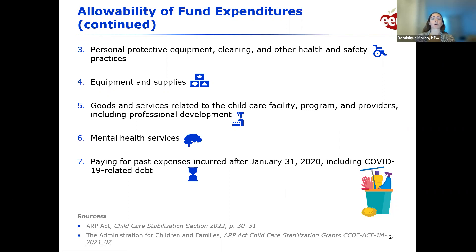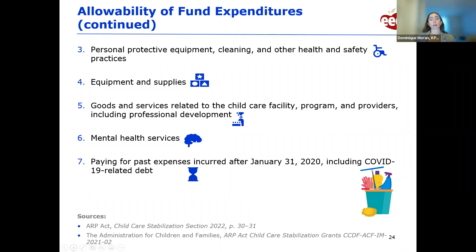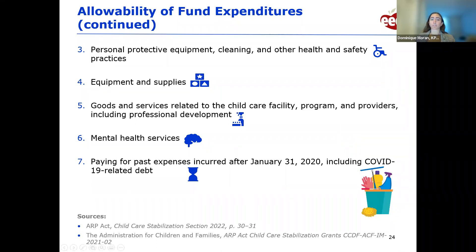Category four is equipment and supplies — equipment might include payroll or bookkeeping software and supplies might be materials for children's play and learning. Category five is goods and services related to the child care facility, including professional development. Category six is mental health services, which you can use for yourself, your staff, and children in your care. Category seven is past expenses incurred after January 31st, 2020, including COVID-19 related debt. Past expenses should still fall into one of the six previously discussed categories — for example, rent owed from last year still falls into an allowable category.